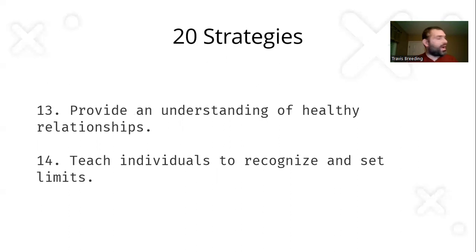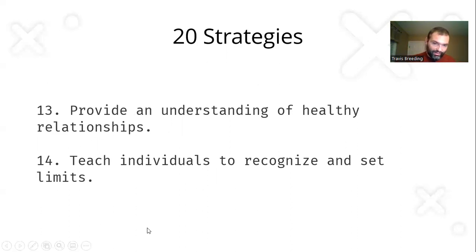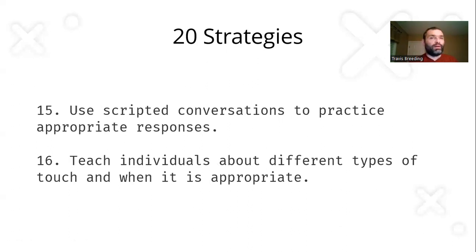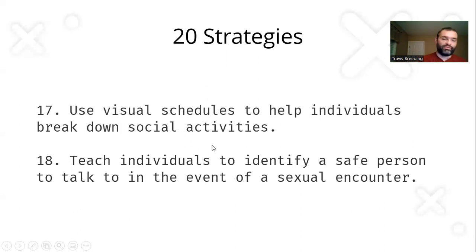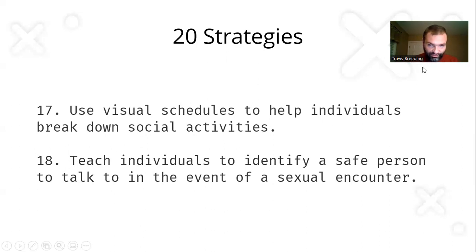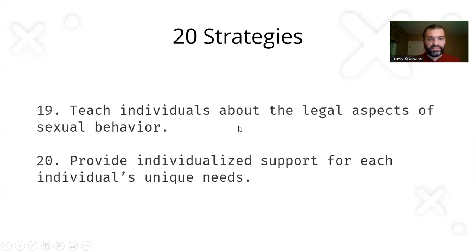Fourteen: provide an understanding of healthy relationships — model and explain what a healthy social and romantic relationship looks like, and what is healthy versus unhealthy. Fifteen: teach individuals to recognize and set limits — everyone has boundaries to follow, and you also want to have boundaries for yourself. Sixteen: use scripted conversations to practice appropriate responses. Seventeen: teach individuals about different types of touch and when each is appropriate in different contexts. Eighteen: use visual schedules to help individuals break down social activities. Nineteen: teach individuals to identify a safe person to talk to in the event of a sexual encounter — teach stranger danger and who they can safely interact with. Twenty: teach individuals about the legal aspects of sexual behavior, and provide individualized support for each individual's unique needs.